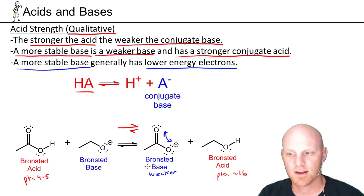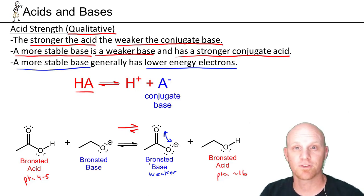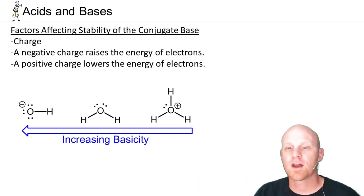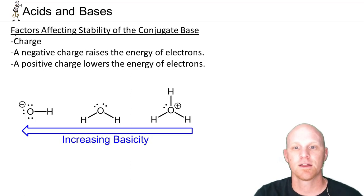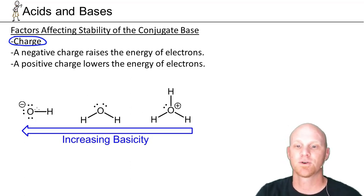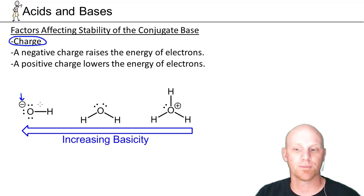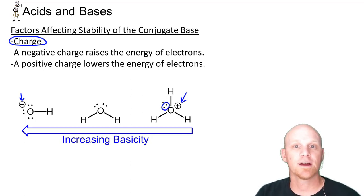This isn't something we do arbitrarily — we follow a set of rules in order. Rather than using pKa values, we assess bases based on the energy of their electrons. The more stable base has lower energy electrons and is the weaker base. Now, the first factor affecting conjugate base stability is charge. Most of the time you'll be comparing bases with the same charge, but a negative charge raises the energy of electrons making them more reactive — a stronger base — while a positive charge lowers electron energy, making them a weaker base.